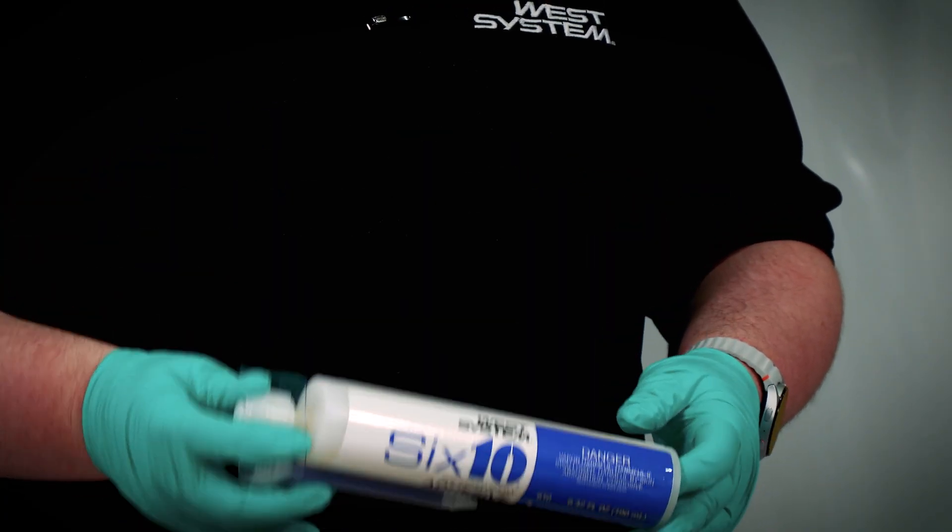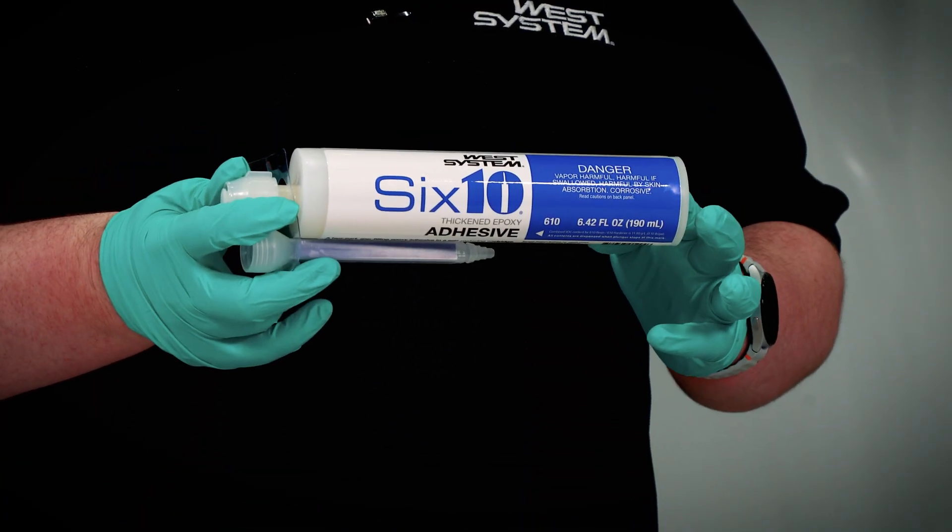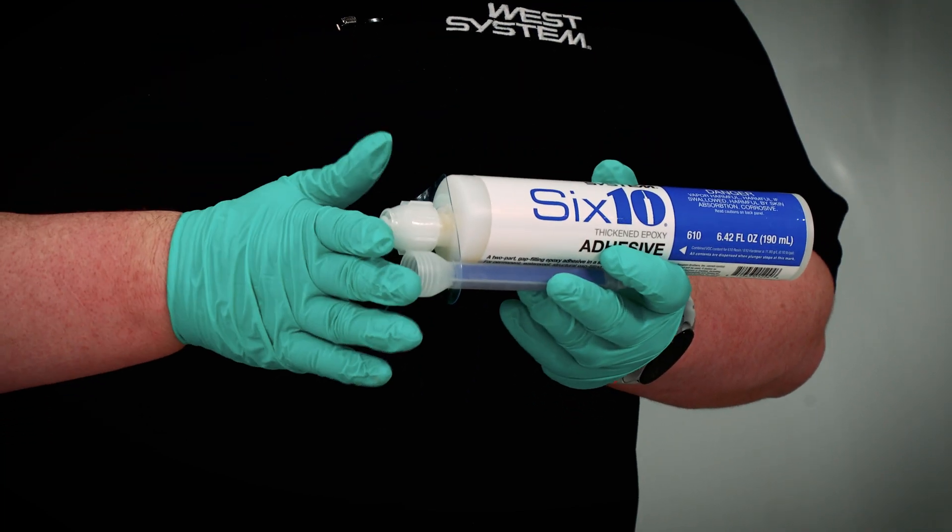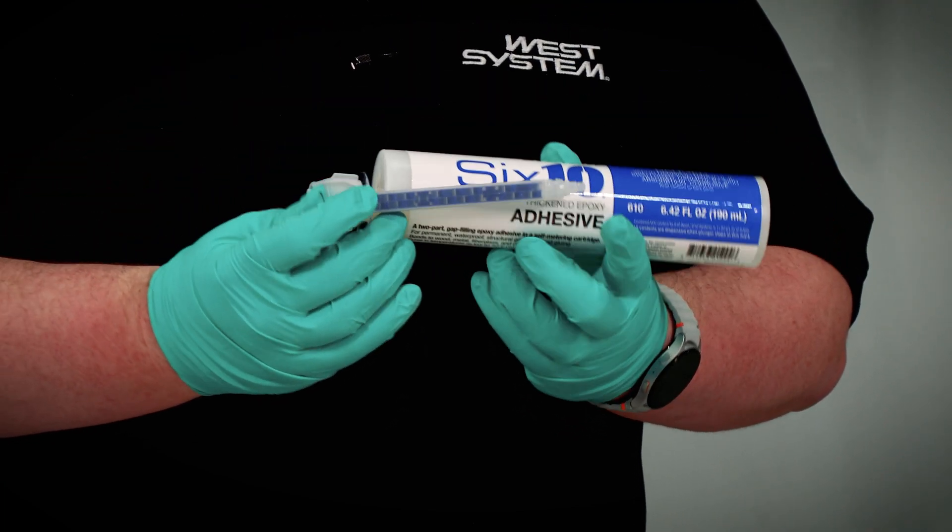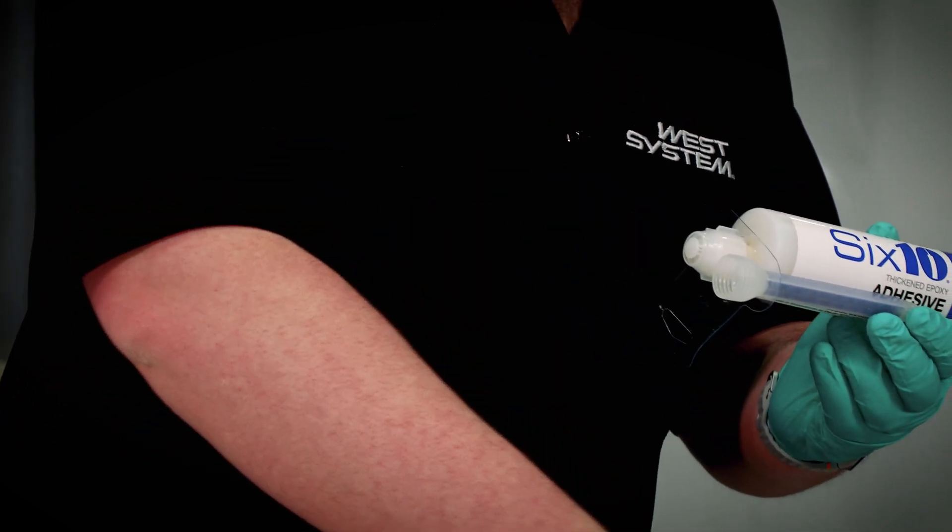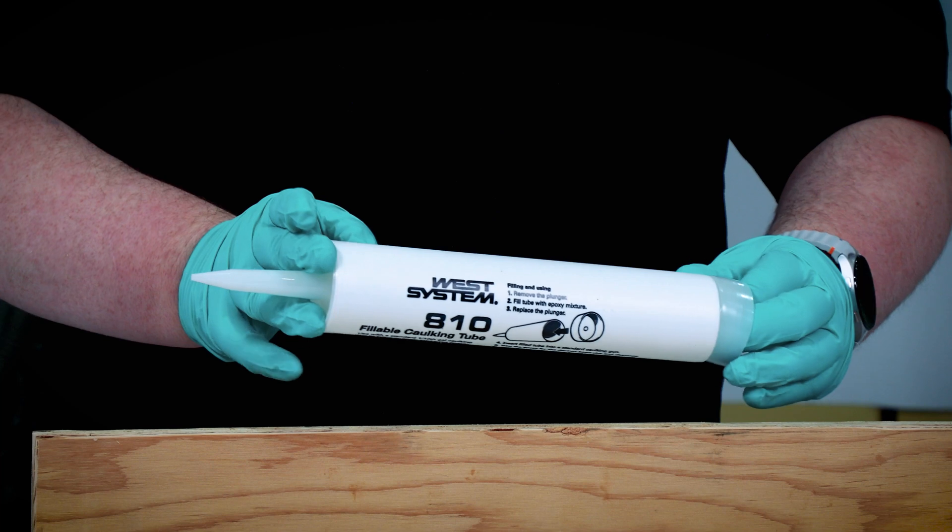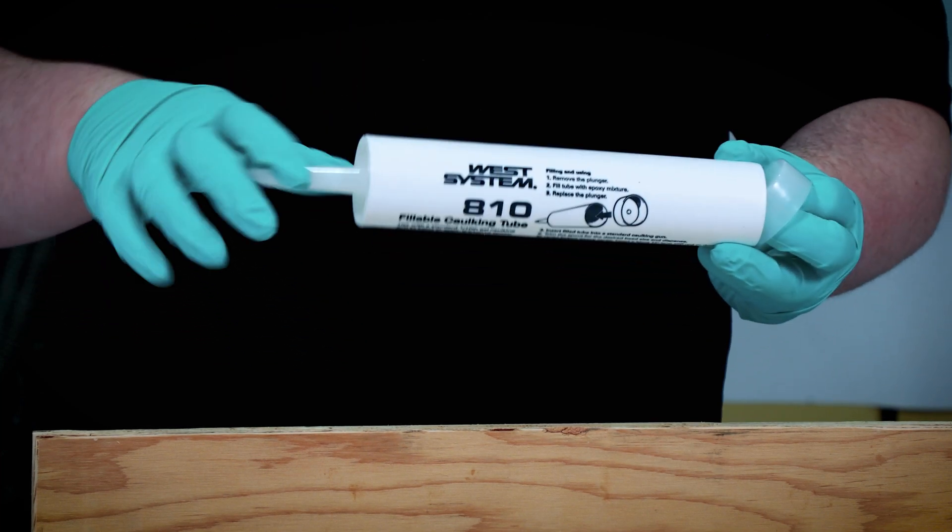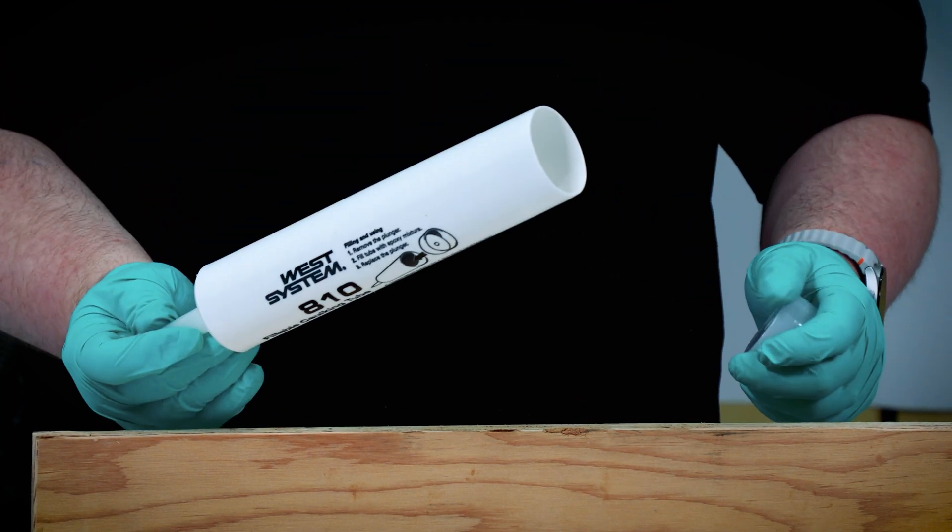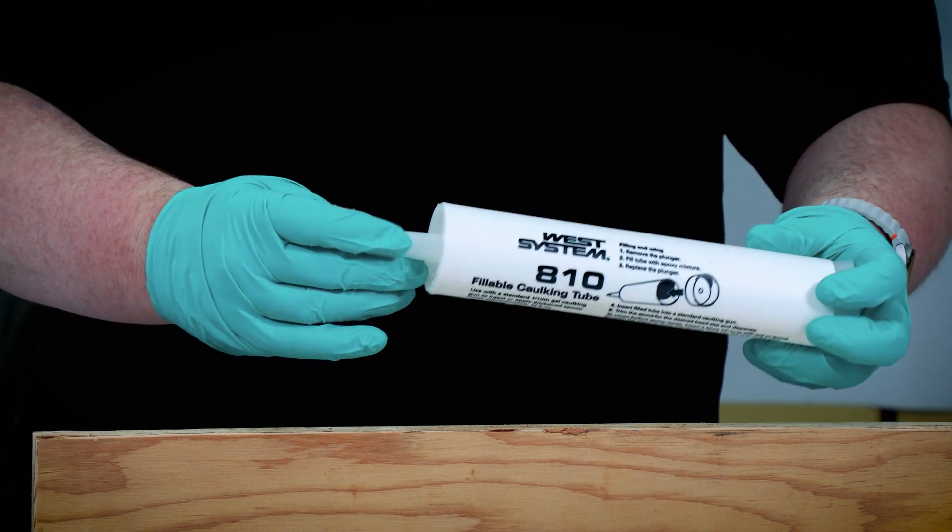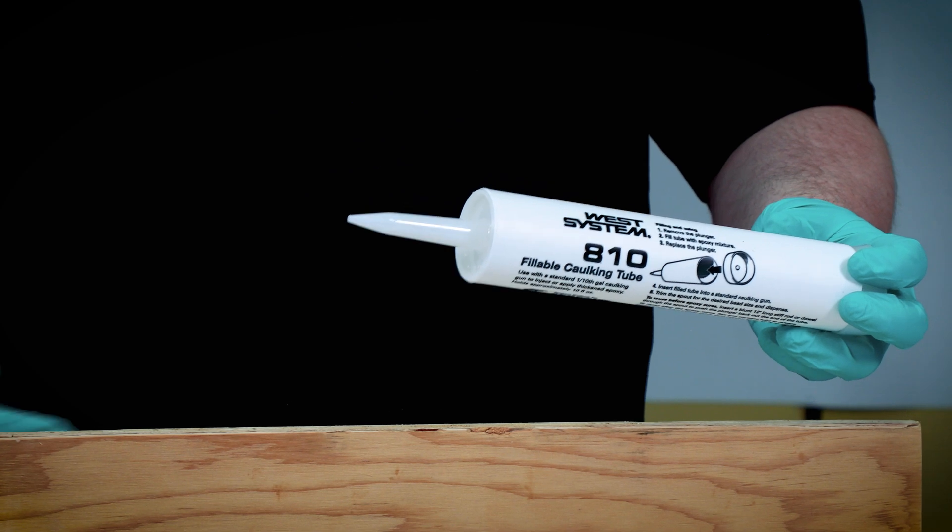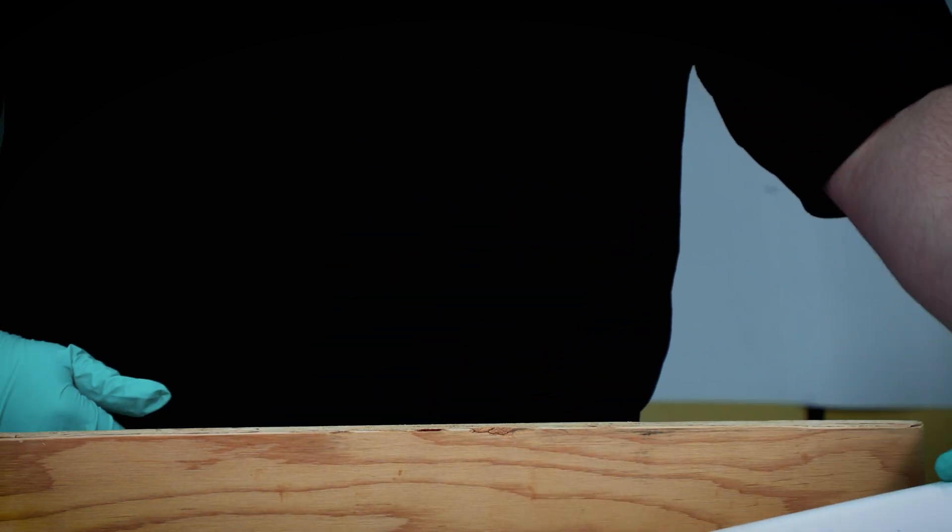There are many different ways you can do this, including using our 610 thickened epoxy adhesive. It's really easy to use. It comes pre-thickened and mixes everything for you right in this nozzle. You can use the nozzle to inject it straight into your joint. Next, we have our 810 fillable caulking tubes. They're really easy to mix up some thickened epoxy, fill them up, put the cap on, then place them into a standard caulking gun, and you can treat it just like the 610, eject it right into our joint.